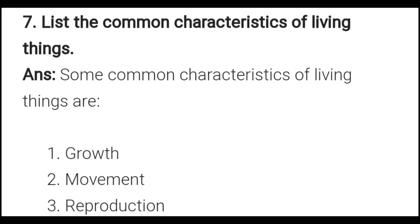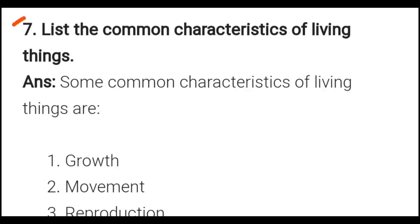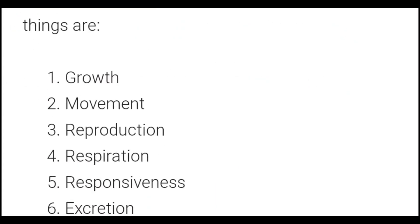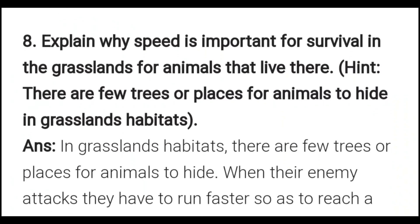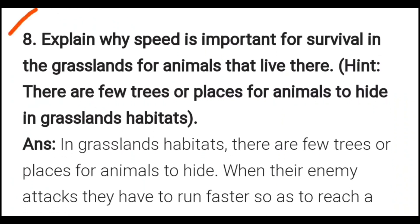List the common characteristics of living things. Some common characteristics of living things are: one — growth; two — movement; three — reproduction; four — respiration; five — responsiveness or sensitivity.